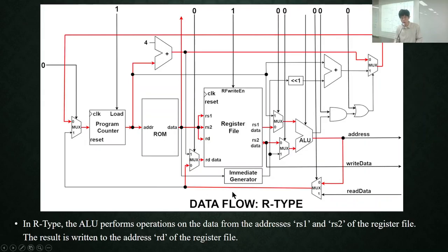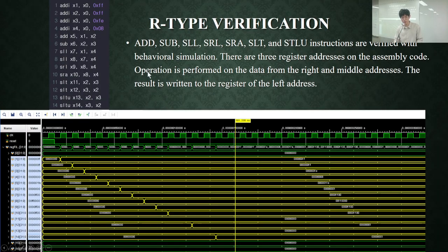This shows the data flow of R-type. Two register values go to the ALU, ALU performs operation on the two data values, and this result is written back to the register file. This shows the verification of R-type instructions.